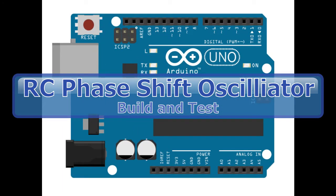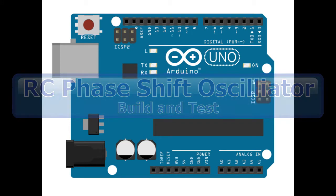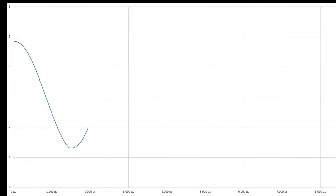Hi, in this video we'll build an RC phase shift oscillator, and we'll use the Arduino oscilloscope that we built in an earlier video to then do the testing of it. The expected output from the oscillator circuit will be a low frequency sine wave.